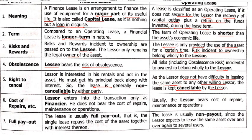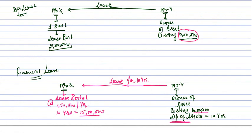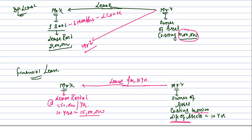Obsolescence risk: in a financial lease, the lessee bears the risk of obsolescence because the asset is held for a long time. In an operating lease, the lesser bears the obsolescence risk since it is only for one year. Right to cancel: in a financial lease, the lesser is interested in his rentals and getting his principal back along with interest, so the lease is generally non-cancellable by either party. In an operating lease, the lease is cancellable — the lesser can cancel it after 6 months and give the asset to another willing lessee.